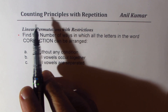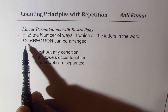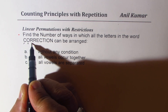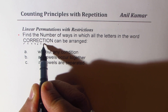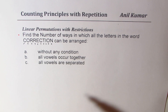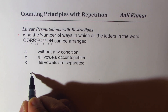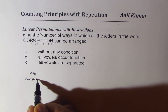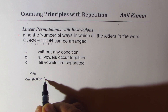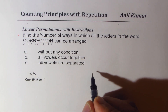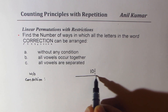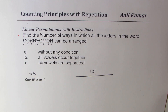Based on counting principle, let's see how many letters are here in the word CORRECTION. So there are 10 letters. Without any condition, the number of ways will be 10 factorial divided by how many are repeated.